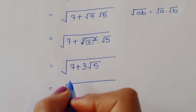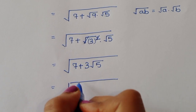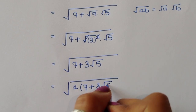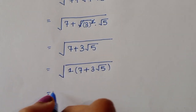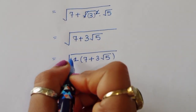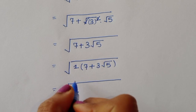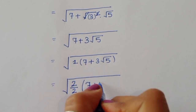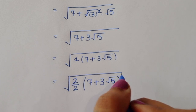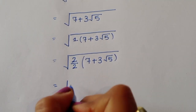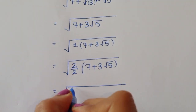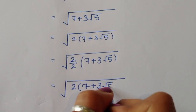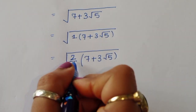Now, 7 plus 3 square root of 5 — we consider a multiplication factor of 1, which is common in all terms. We write 1 as 2 divided by 2, so we have 2 over 2 times (7 plus 3 square root of 5). This gives us 2 times (7 plus 3 square root of 5) divided by 2.